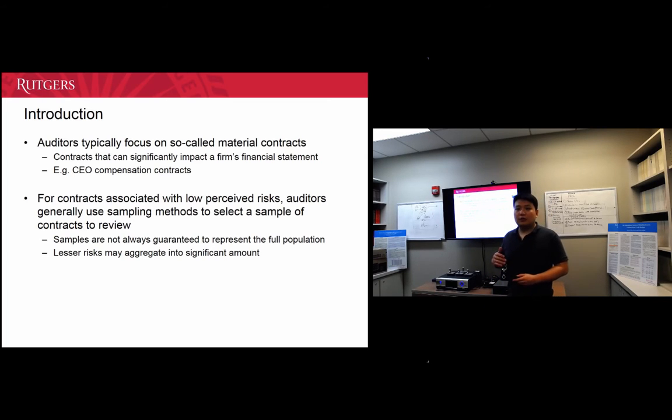However, for contracts with low perceived errors or risks, for example sales contracts and insurance contracts, auditors will use audit sampling methods to only select a sample of these contracts to examine. The limitation of this methodology is that sampling does not always guarantee appropriate representation of the full population, or the sample number may be too small. The lesser risk embedded in those unaudited contracts may aggregate into a significant amount.